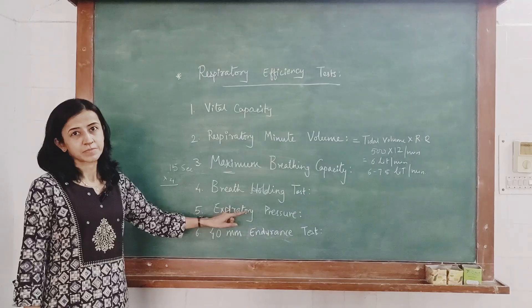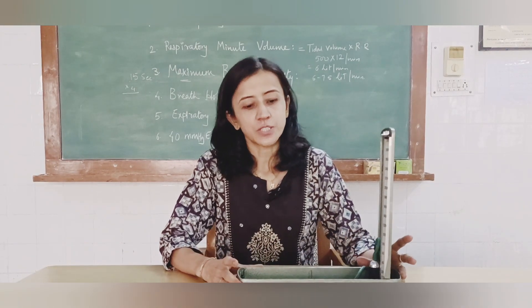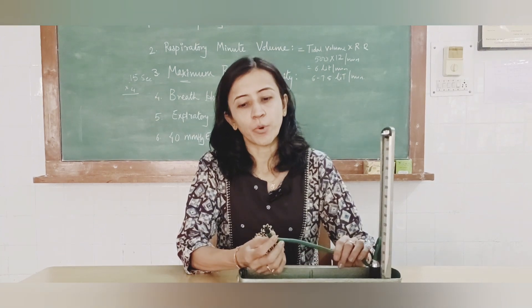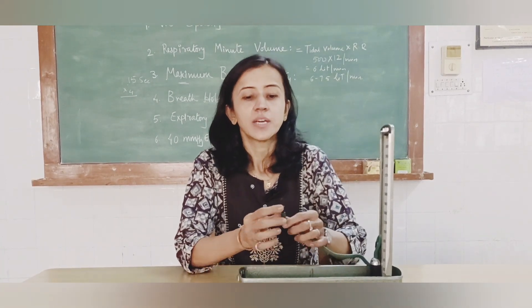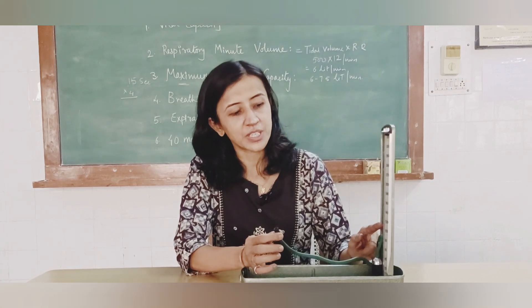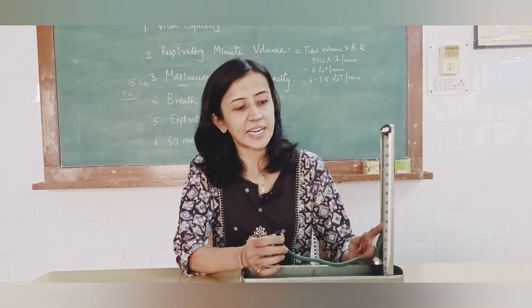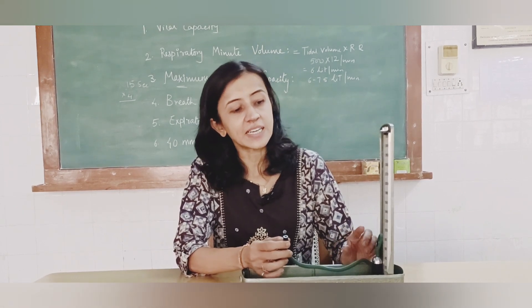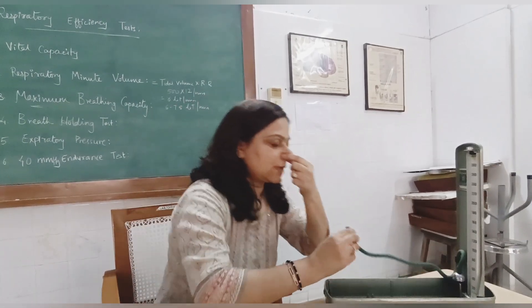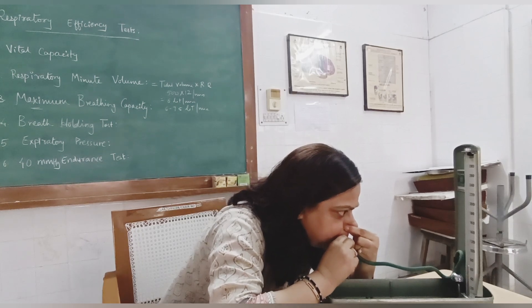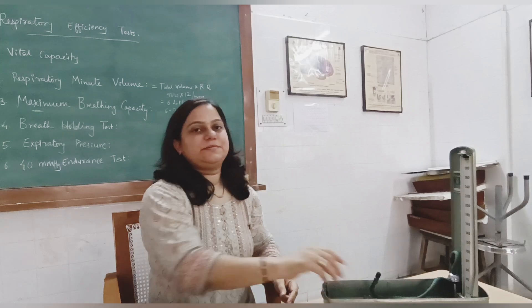Next is the expiratory pressure test, for which a sphygmomanometer is used. Ask the subject to inspire deeply and with the nose closed, ask the subject to expire through the mouth into the tube of the sphygmomanometer and raise the mercury column. Measure the maximum pressure up to which the mercury column can be raised. The normal value for the expiratory pressure test is 100 mm of mercury.